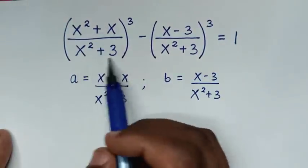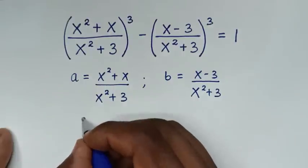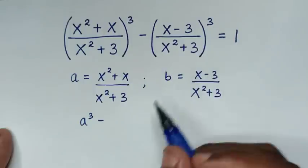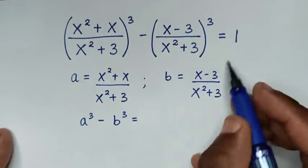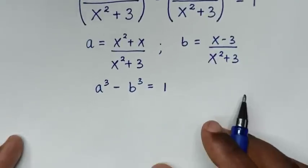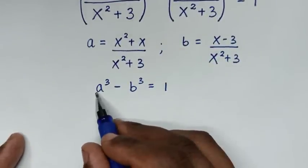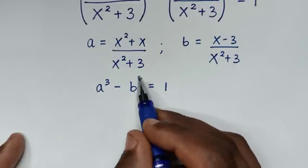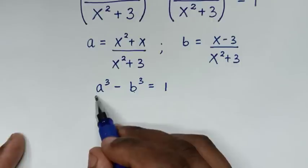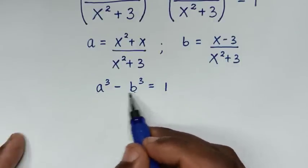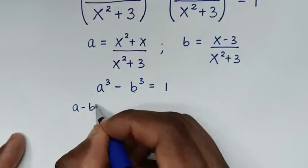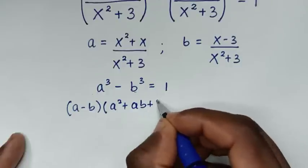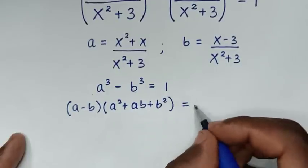Then because this is let as a, it will be a³, and this is let as b, it will be b³. So a³ minus b³ is equal to 1. From the left side, a³ minus b³ is in the form of a perfect cube. So we apply the perfect cube rule: a³ - b³ = (a - b)(a² + ab + b²) = 1.